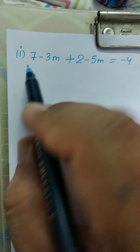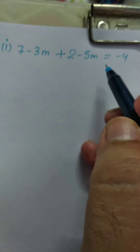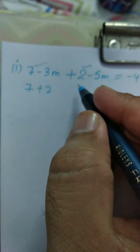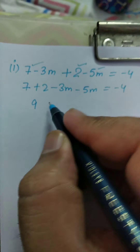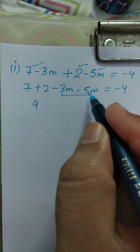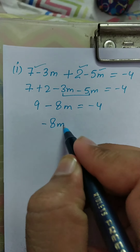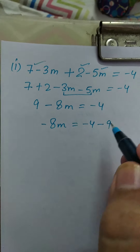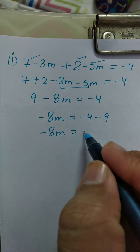Now come to part I. In part I, you have 7 minus 3M plus 2 minus 5M equal to minus 4. First of all, you have to solve this equation. 7 plus 2 is 9, and minus 3M and minus 5M equals minus 8M. Equal to minus 4. Now, minus 8M is equal to minus 4. Shift 9 from LHS to RHS — it will become negative. So minus 8M is equal to minus 4 minus 9, equal to minus 13.